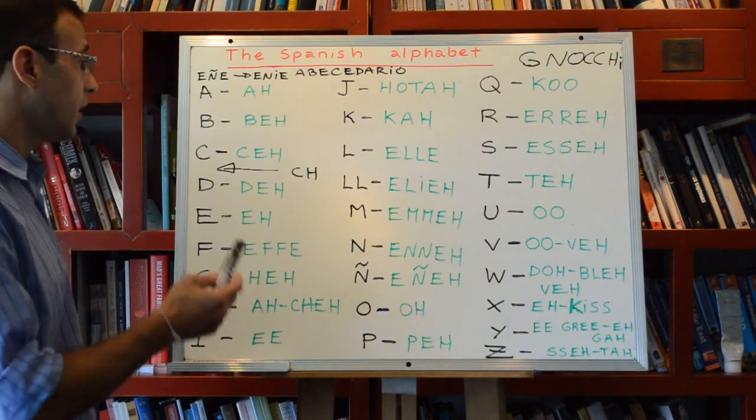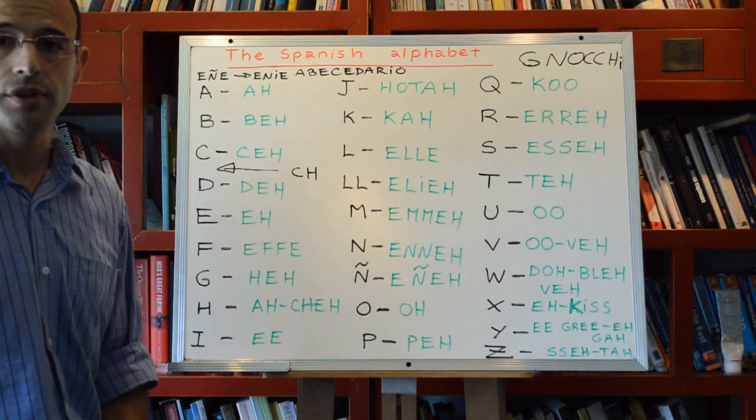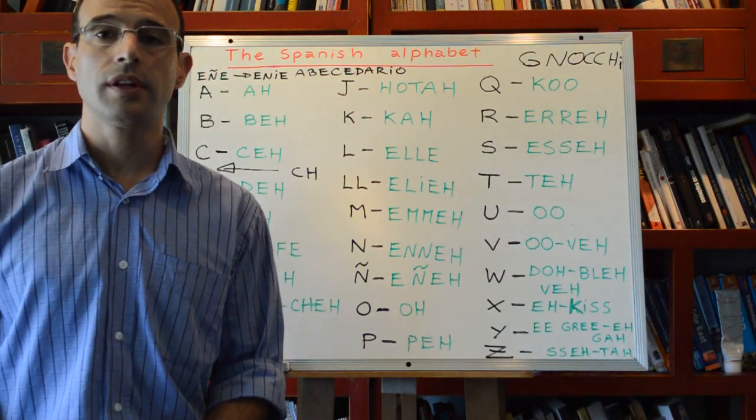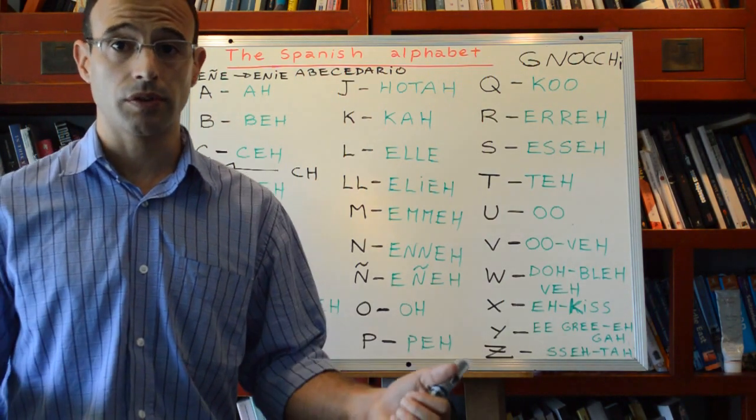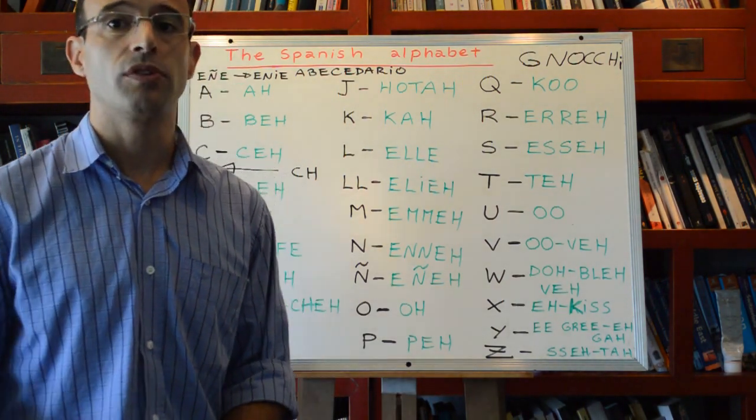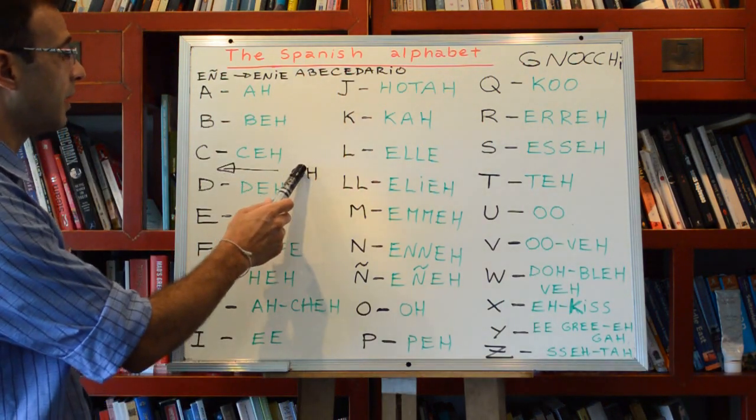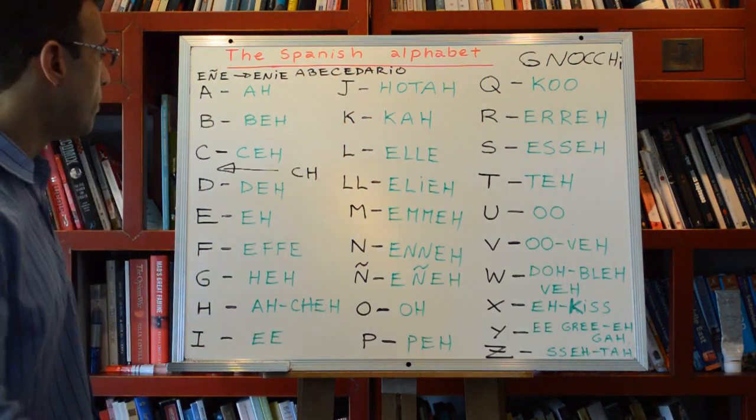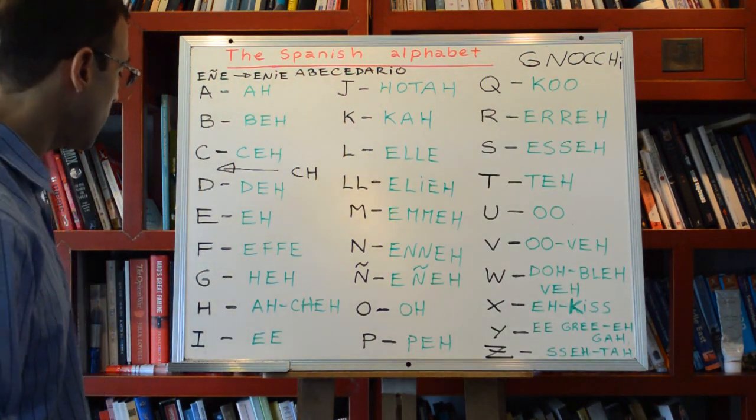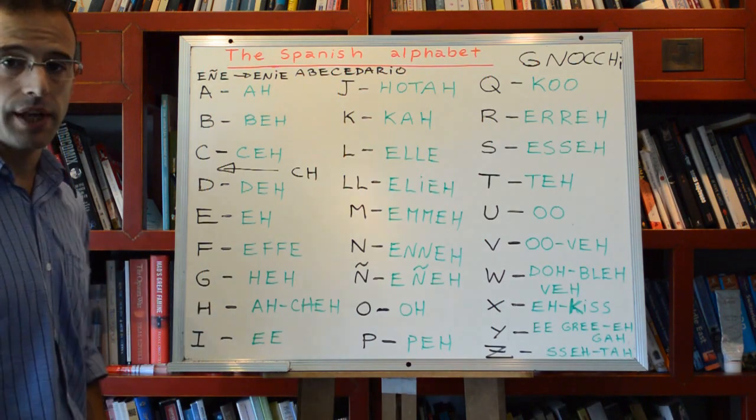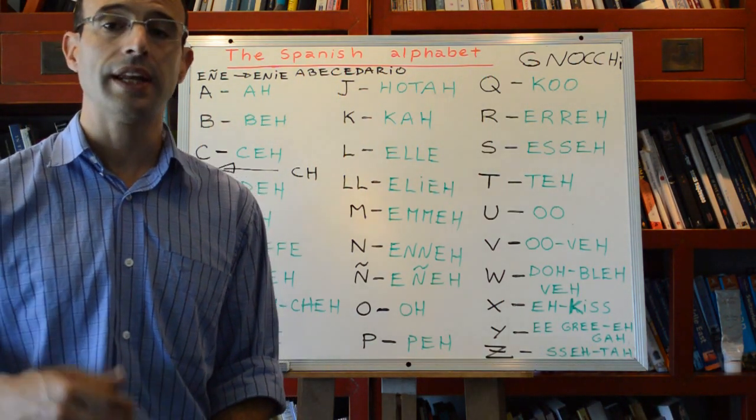But CH as a letter was pronounced 'che'. Why? Because CH has a unique and independent sound different to C and to H. Therefore, for a long time the Real Academia Española, the Institute that officially determines what is Spanish and what is not, had decided that letter CH would be part of our alphabet after letter C.